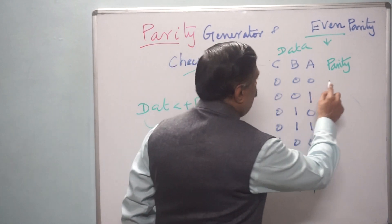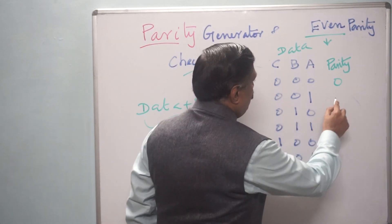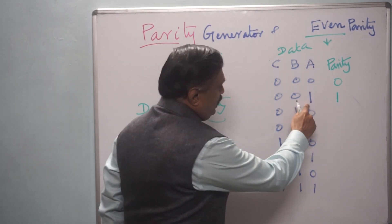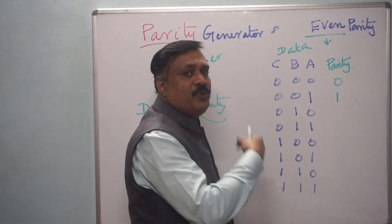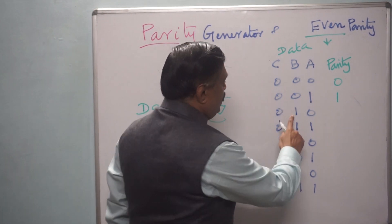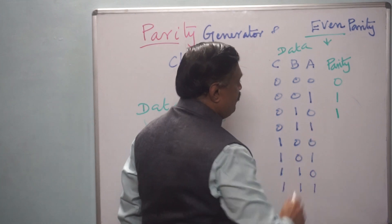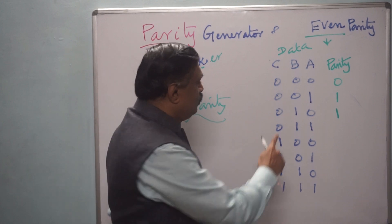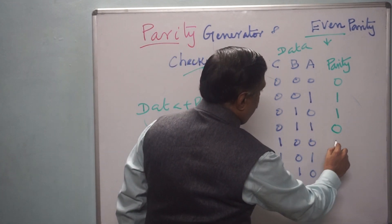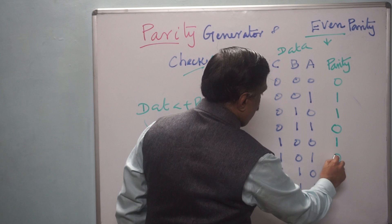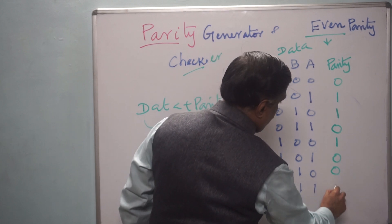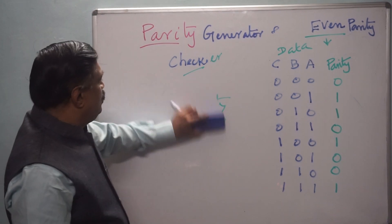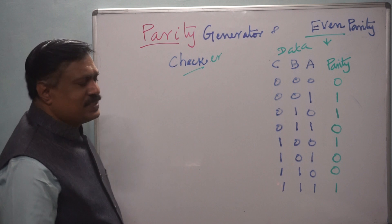Here 0 means include 0, here 1 means 1 — the number of 1s should be even. Therefore, in the data only one 1 is there; if you put 1 for the parity bit, then including data and parity bit it should be even — therefore 2 ones. And for the other rows you fill in similarly: here 0, here 1, here 0 — this is the parity we have generated.